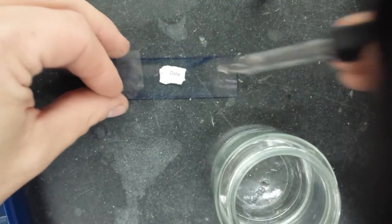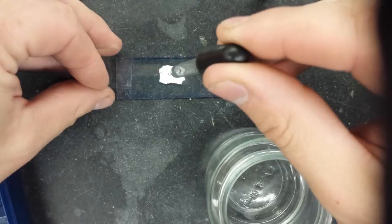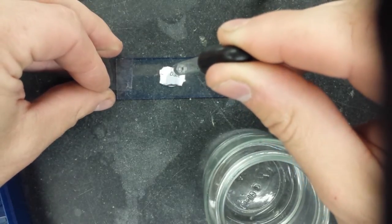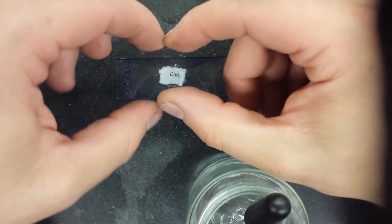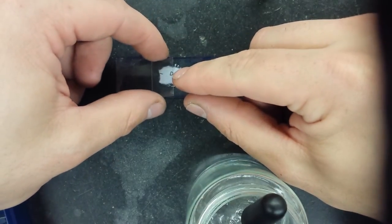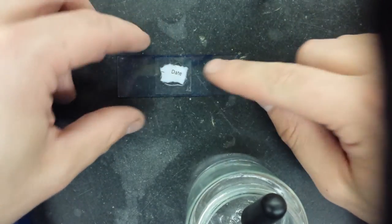Put a drop or two of water. This specimen is a little bigger than normal so I'm gonna put two drops. There's one, there's two. Hold the cover slip at like a 45 degree angle as such, drop it down.